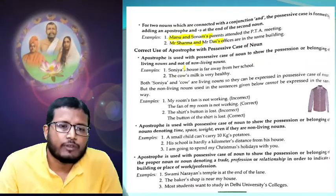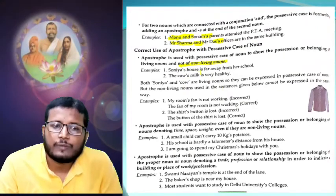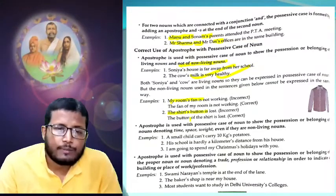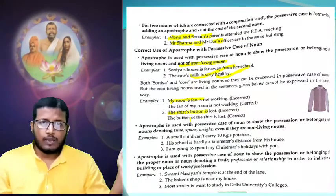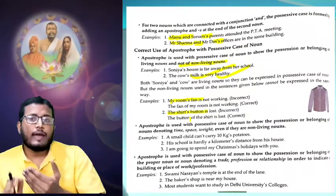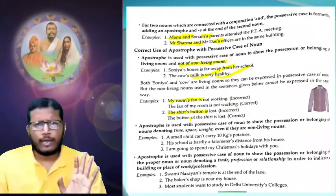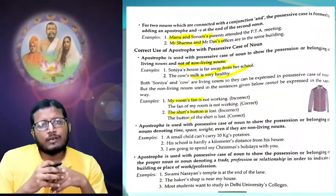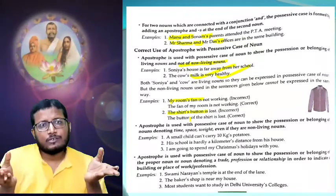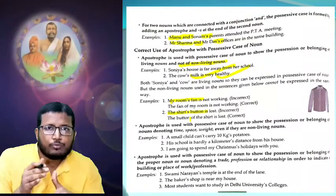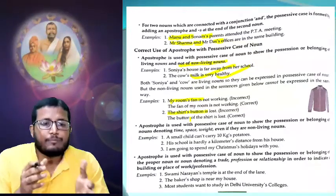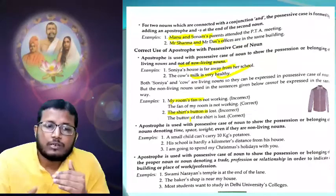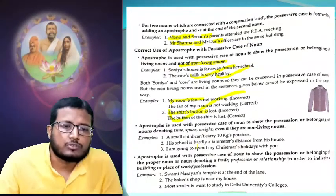Apostrophe is used with possessive case of noun to show possession or belonging of living nouns, and not non-living nouns. For example: 'my room's fan' — my room is a non-living thing and the fan is also non-living. You cannot do apostrophe with non-living things. To show a relation, you should use a preposition like 'of'. You cannot say 'the chair's leg' — it should be 'the leg of the chair'. You cannot say 'my room's fan' — it should be 'the fan of my room'.